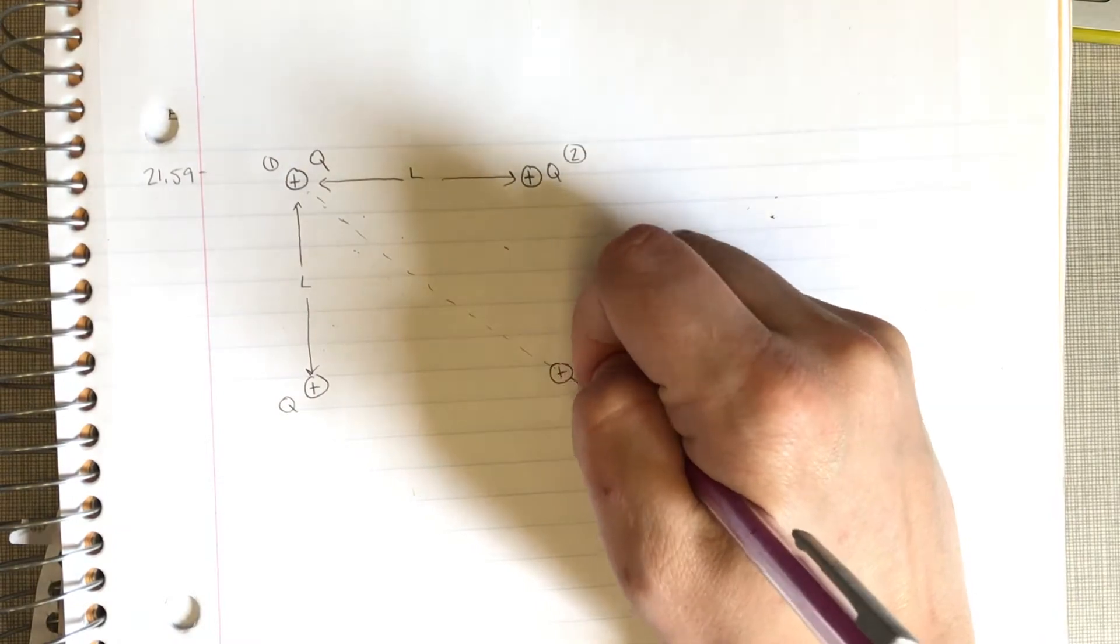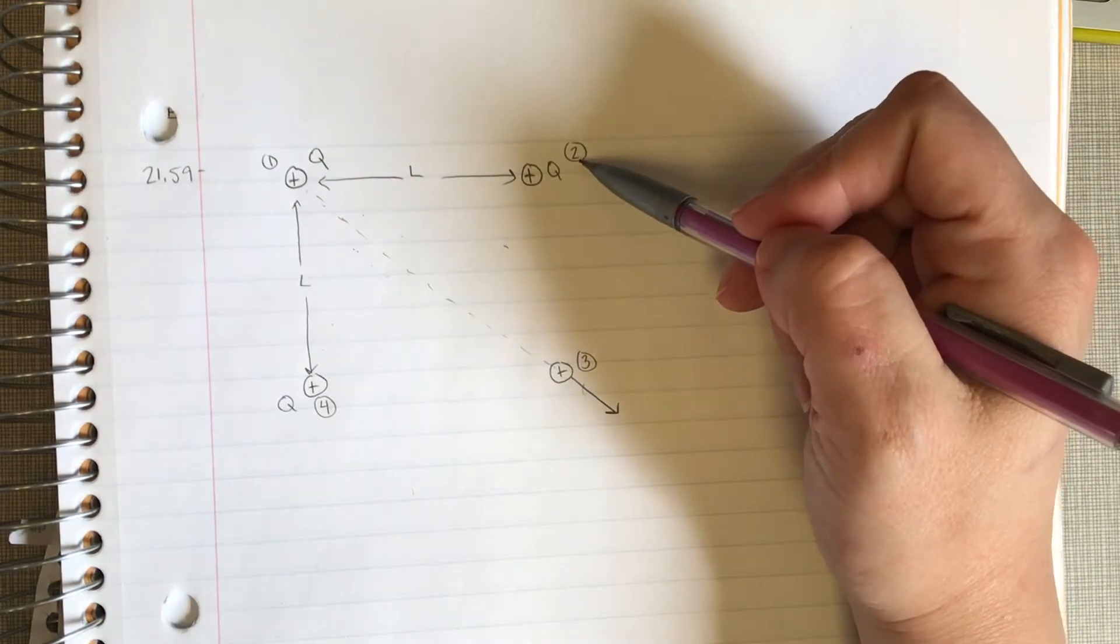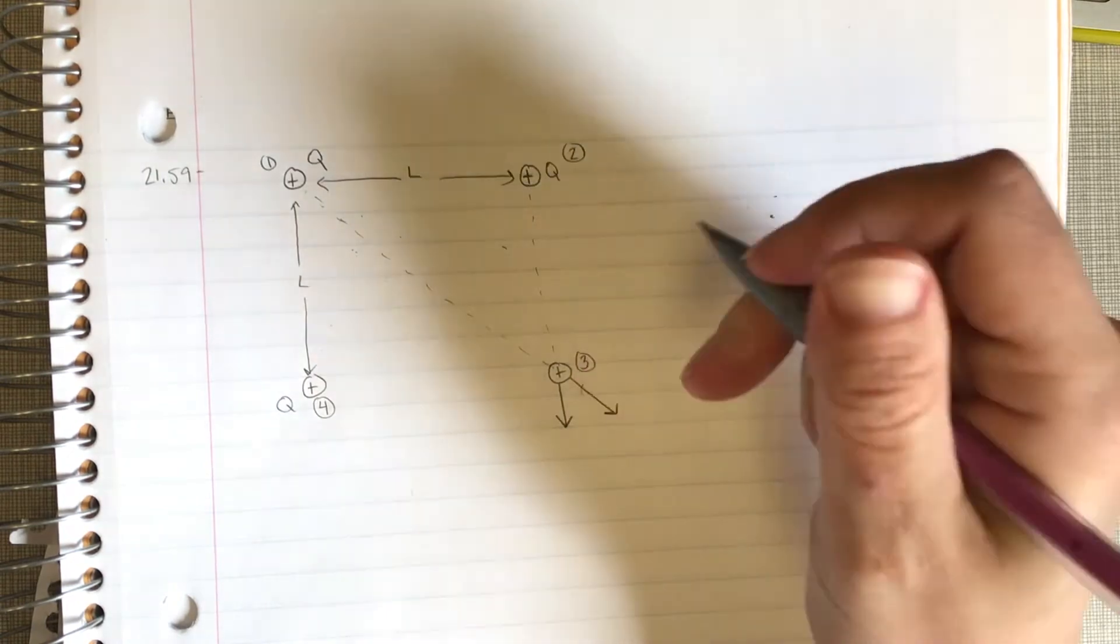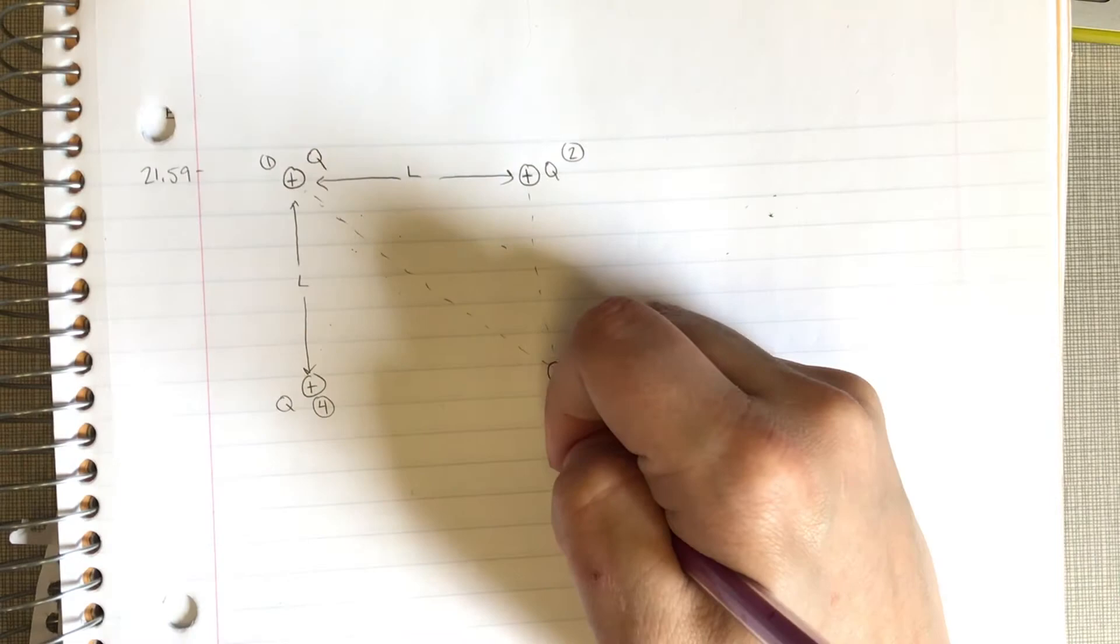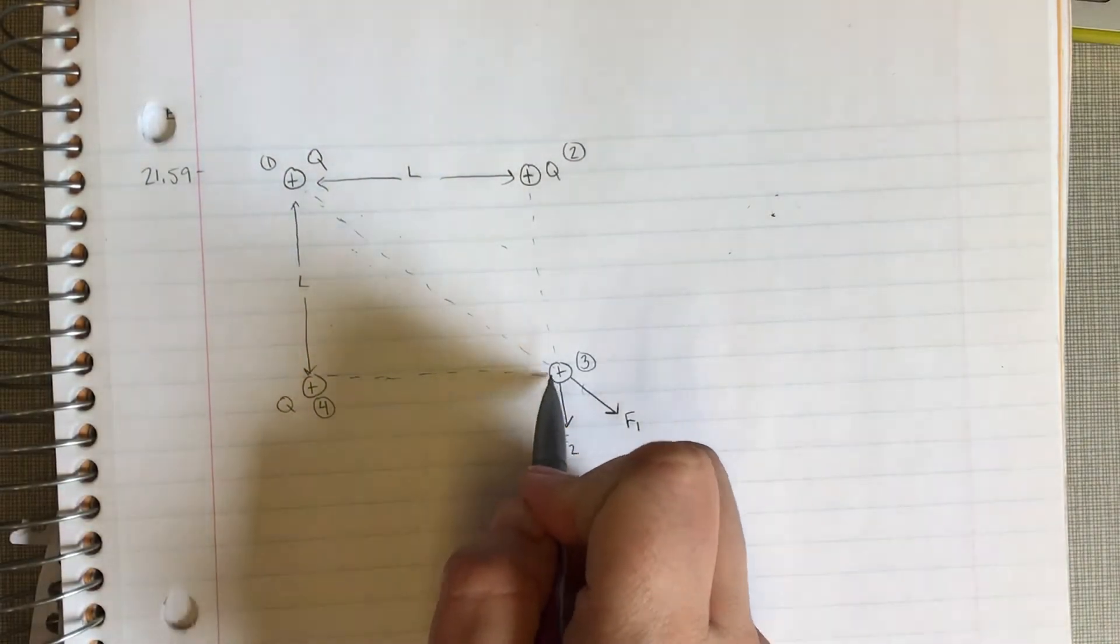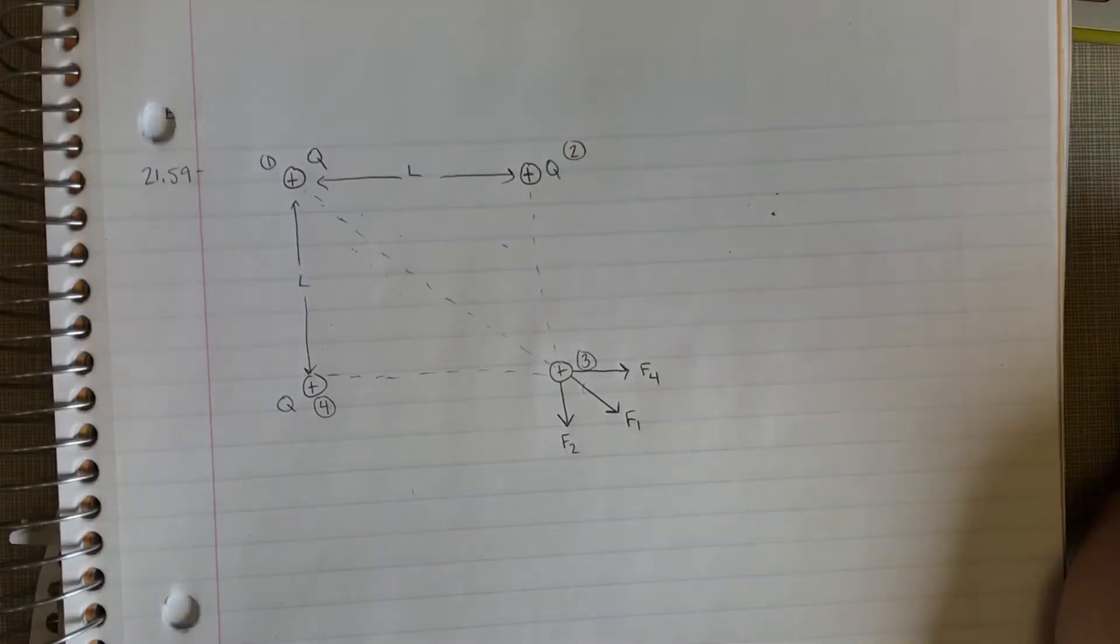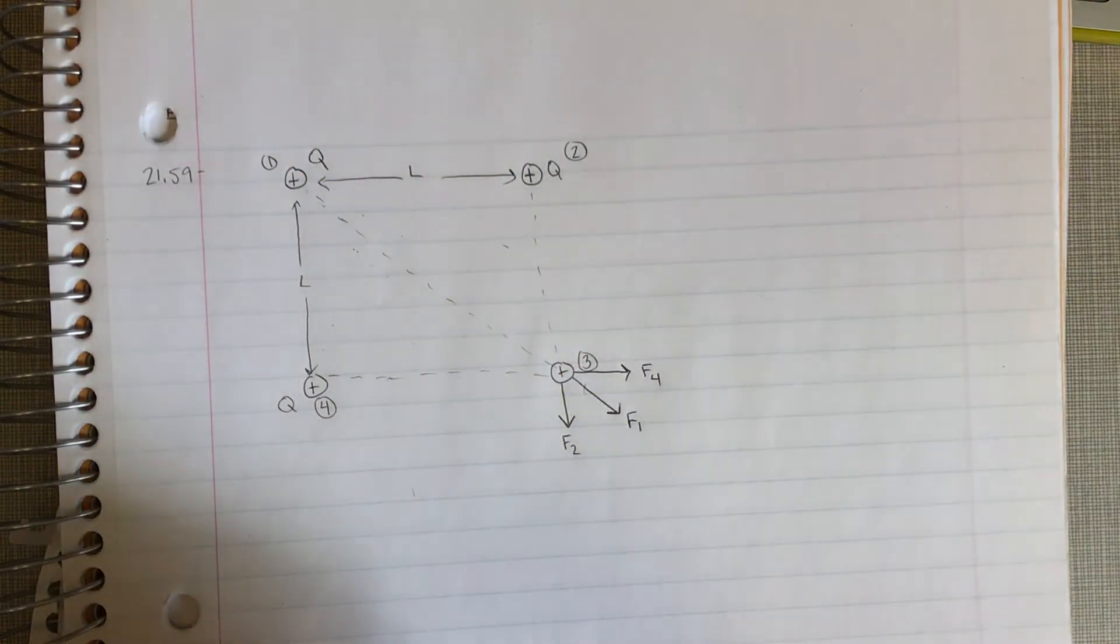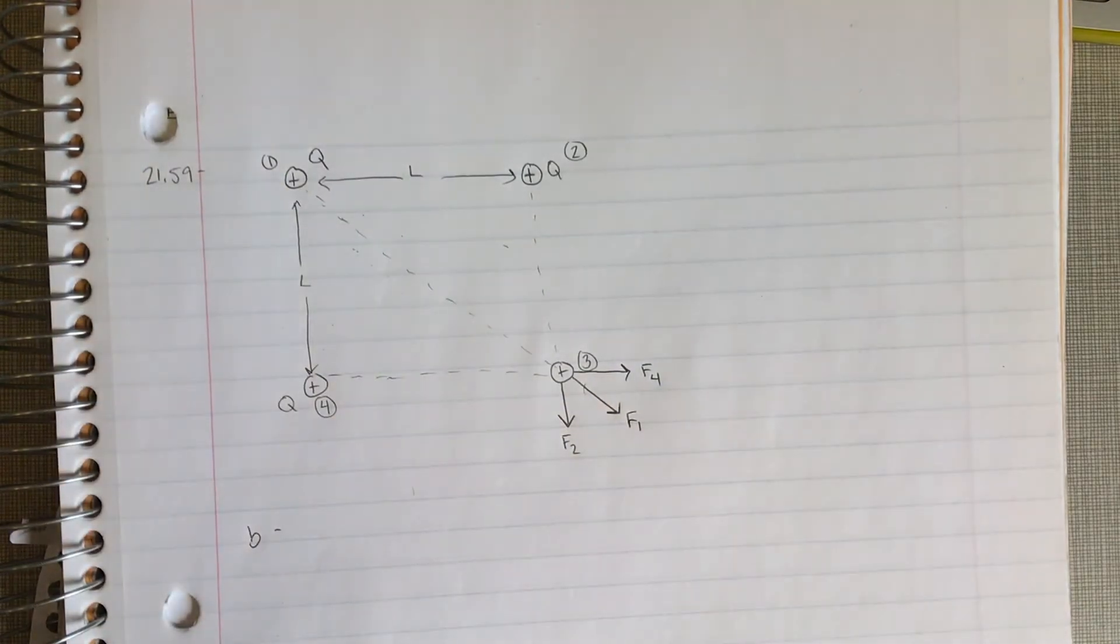Label again because that seemed to help last time: one, two, three, four. Now if charge 2 is acting on this guy, he's also going to be pushing this guy straight out of the way. So this is the force from one, this is the force from two, and then the force from four is going to do the same thing. Congratulations, you just drew a free body diagram.